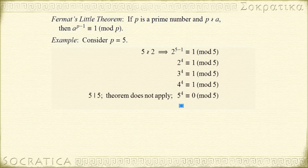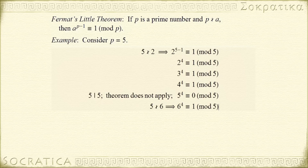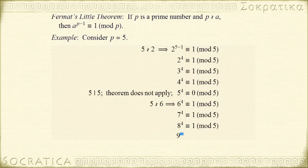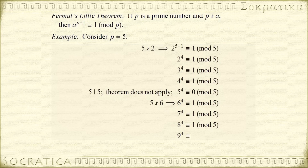Let's keep going. 5 does not divide 6, so 6 to the 4th is congruent to 1 mod 5. 5 and 7 are relatively prime, so 7 to the 4th is congruent to 1 mod 5. Similarly, 8 to the 4th is congruent to 1 mod 5, and 9 to the 4th is congruent to 1 mod 5.